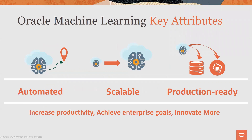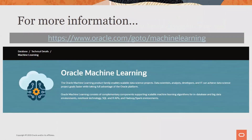Wrapping up: Oracle Machine Learning key attributes are automation, scalability, and production-readiness. Automation streamlines the data science and machine learning process. Scalability requires parallel distributed algorithms and infrastructure to handle enterprise-level data. Production-readiness means seamless integration from models into applications or dashboards. The goal is to increase productivity, achieve enterprise goals, and give users more time to focus on innovative, interesting ways to solve business problems. For more information, visit oracle.com/go/machinelearning for a number of Oracle Machine Learning resources.